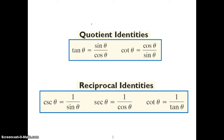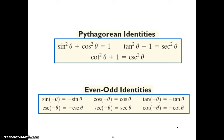These are the identities we're going to be working with in this section — hopefully they all look familiar. They're on the upper left-hand side of your identity sheet. The quotient identities: tangent theta is sine theta divided by cosine theta, cotangent is cosine over sine. The reciprocal identities for cosecant, secant, and cotangent. The Pythagorean identities, which we've already been working with. And the even-odd identities — for sine and cosecant, you can factor out a negative from a negative angle, same for tangent and cotangent. But for cosine and secant, the negative just goes away.